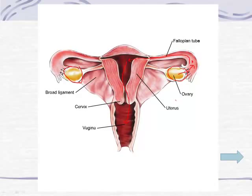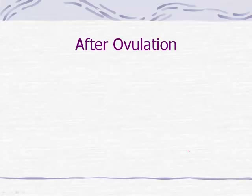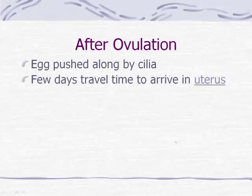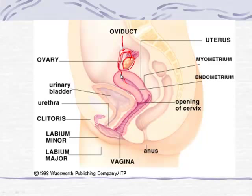After ovulation occurs, the egg is pushed along by small hair-like structures called cilia. They encourage the egg to be moved along down the fallopian tube or oviduct towards the uterus. If you've watched Life's Greatest Miracle already, you saw some of the cilia moving the egg down, and also some of the complications - where eggs can get lodged into the oviduct or fallopian tubes. It usually takes a few days for the egg to travel down into the uterus, so there are a few days of opportunity for that egg to be fertilized as it's traveling towards the uterus.